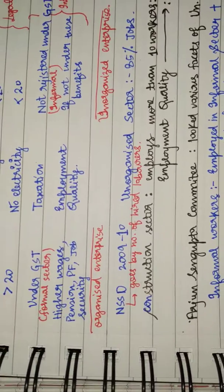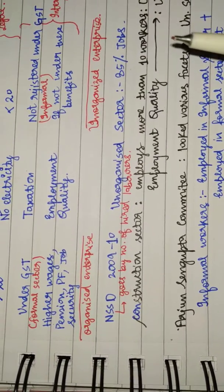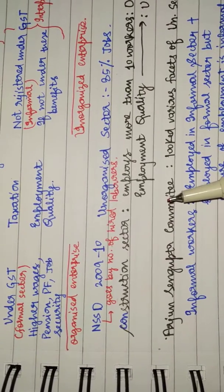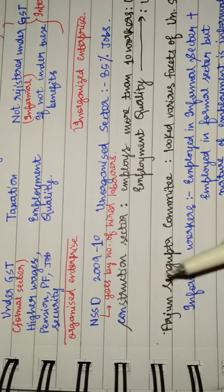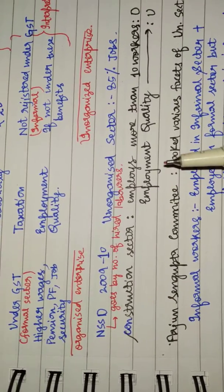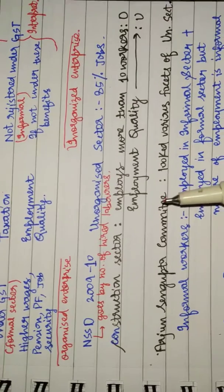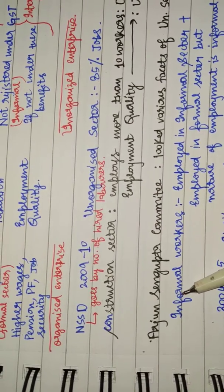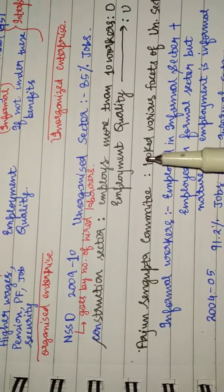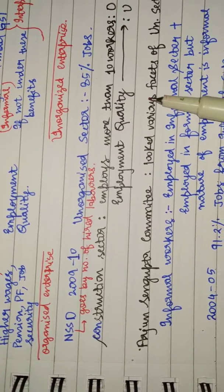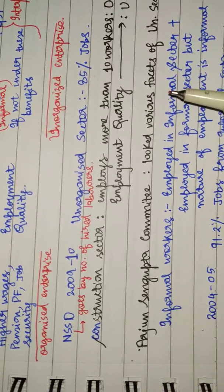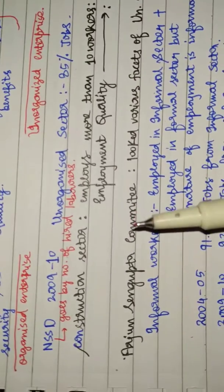To solve this confusion, government formed a committee headed by Sen Gupta, and it was known as the Arjun Sen Gupta Committee. It looked upon the various facets of unorganized sector and came up with the definition of informal workers: one who is employed in informal sector or employed in formal sector but the nature of employment is informal.